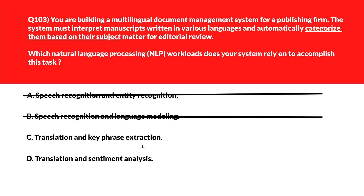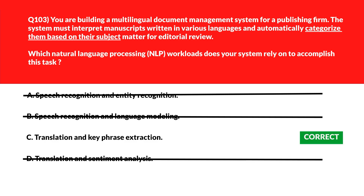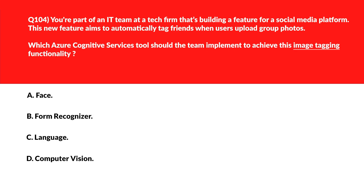Option C says Translation and Key Phrase Extraction — translation converts multilingual content into a common language and key phrase extraction identifies core subject terms to assist in topic categorization, so let's keep this. Option D says Translation and Sentiment Analysis — this focuses on emotional interpretation rather than identifying topic-relevant terms for categorization, so wrong choice. We'll lock option C, Translation and Key Phrase Extraction, as the right answer.